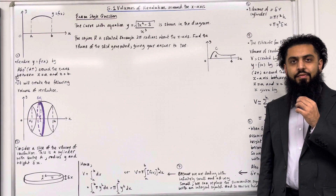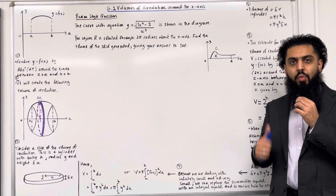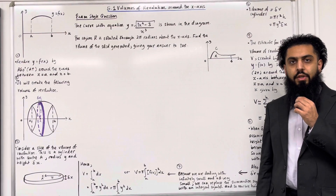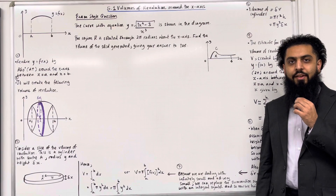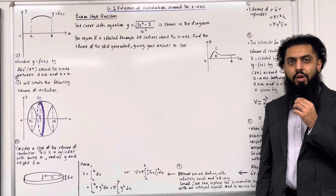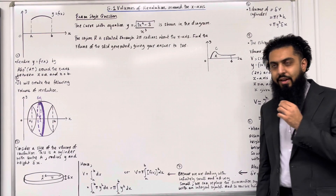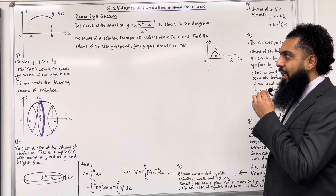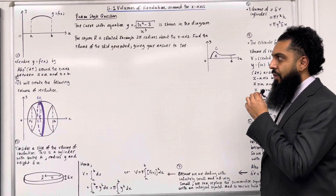Welcome back. In this teaching video, I'll be looking at 5.1 volumes of revolution around the x-axis. 5.1 represents Chapter 5, Section 1 of the Corpio 1 textbook. Let's have a look at the key facts of this section.